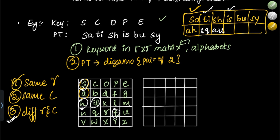For the pair I and S: I is here, S is here — different columns. For S, take the letter in the column of I but same row as S, which is C. For I, take the letter in the column of S but same row as I, which is H. So IS encrypts to CH.